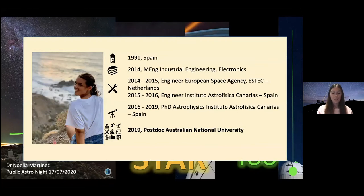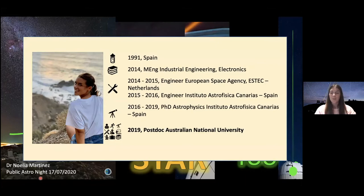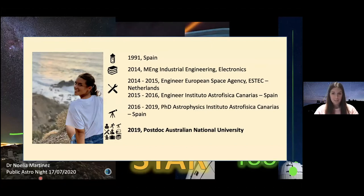I was born in Spain 29 years ago. I studied industrial engineering — my specialty was electronics — and I got two professional positions as an engineer: first in the European Space Agency in the Netherlands, and then in the Astrophysics Institute in the Canary Islands in Spain. In 2016 I started my PhD in astrophysics instrumentation, just building something. I finished October last year, right before moving to Australia to become a postdoc here at ANU.